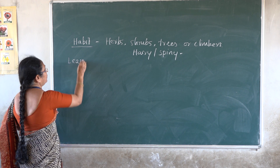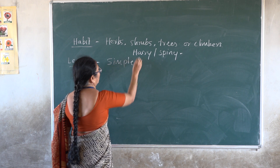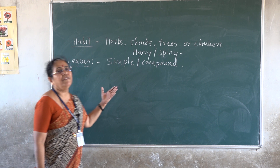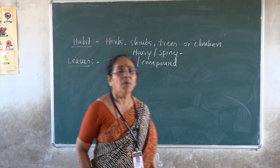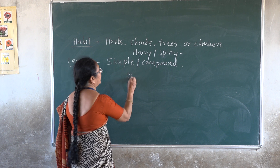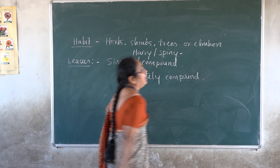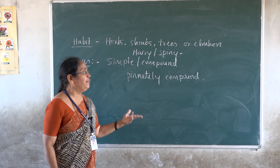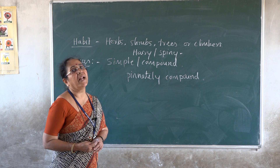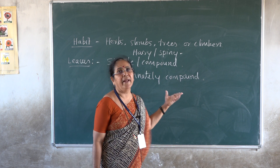The leaves of this family are simple or compound. Very rarely, a few members have simple leaves; otherwise, most family members have compound leaves. Mostly the leaves are pinnately compound, where leaflets are found on both sides of the rachis. Please check the previous video to understand what pinnately compound leaf means.